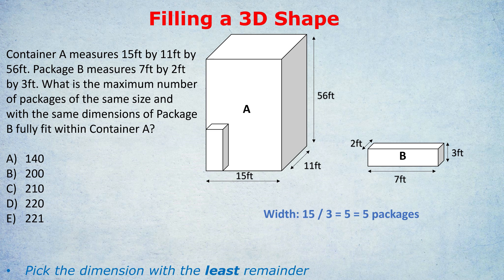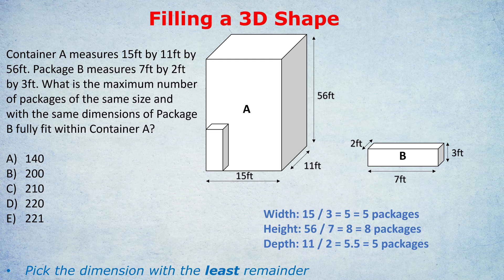So we're always picking the dimensions with the least remainder. If this seems complicated, watch how I do it in this question. And then you'll have one final question to practice yourself. So I'm going to divide the 56 foot by the 7 foot dimension, as displayed with the vertical box there. 56 divided by 7 is 8. So we can fit 8 packages height-wise. And finally, the 11 foot dimension, the depth dimension, we divide it by 2, which is the last remaining dimension of the package B. And 11 divided by 2 is 5.5. So we can only fit 5 that way.